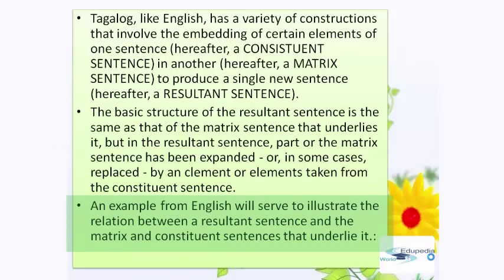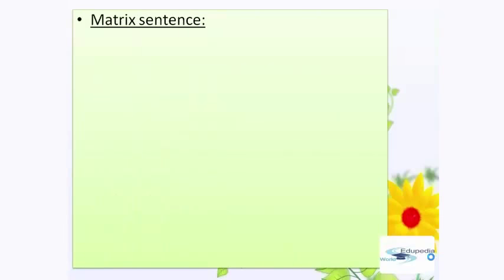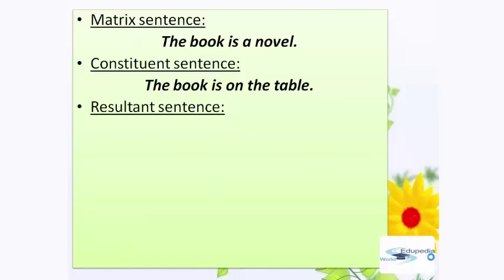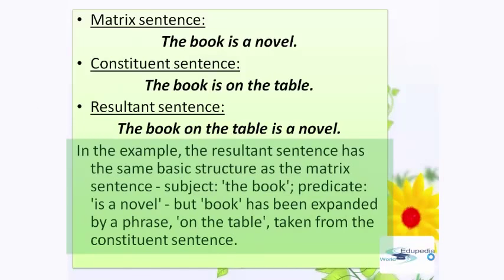An example from English will serve to illustrate the relation between a resultant sentence and the matrix and constituent sentences that underlie it. First, we have the matrix sentence: 'The book is a novel.' Constituent sentence: 'The book is on the table.' Resultant sentence: 'The book on the table is a novel.' In the example, the resultant sentence has the same basic structure as the matrix sentence — subject 'the book,' predicate 'is a novel' — but 'book' has been expanded by the phrase 'on the table' taken from the constituent sentence.